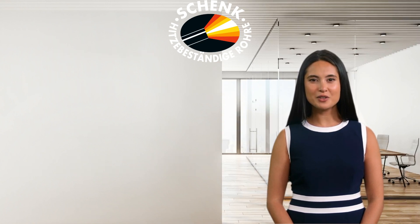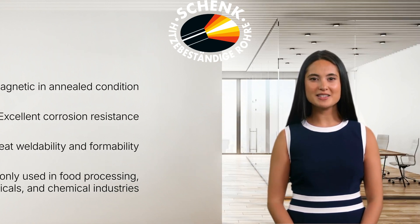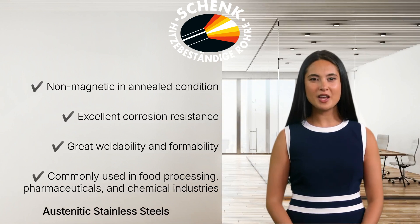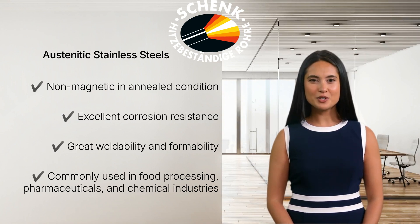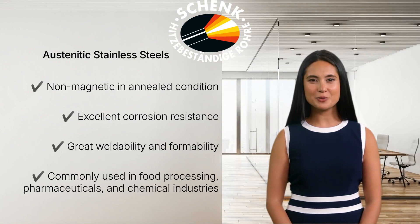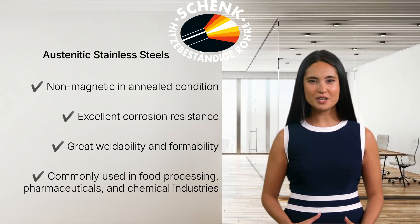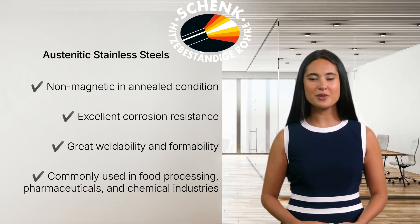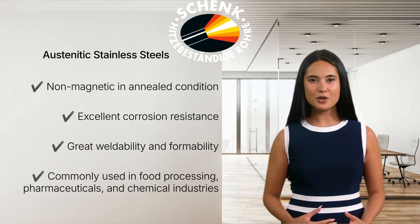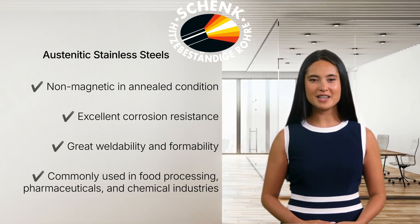Moving on to the largest group, austenitic stainless steels. These steels are well known for their excellent corrosion resistance and are divided into five subcategories. One: chromium-nickel steels (CrNi) — the classic 18/8 stainless steels like 304 and 321, used in kitchenware and construction. Two: chromium-manganese steels (CrMn) — nickel-reduced alternatives for cost savings, but with lower corrosion resistance.